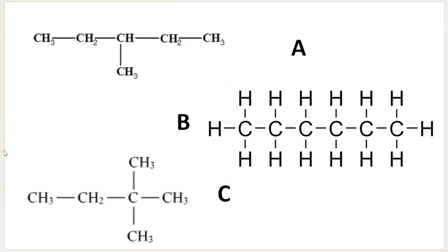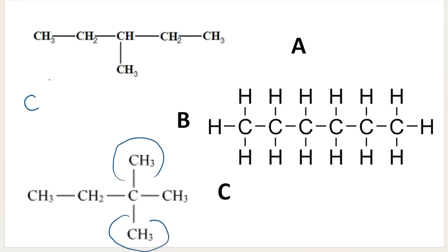So if I had to rank A, B, and C according to their boiling points, starting with the lowest boiling point and ending with the highest, what would you say? You would say C has the lowest boiling point because it has the most branching with two branches. Then A, because it's only got one branch, and then the highest boiling point would go to B, because it has no branches.